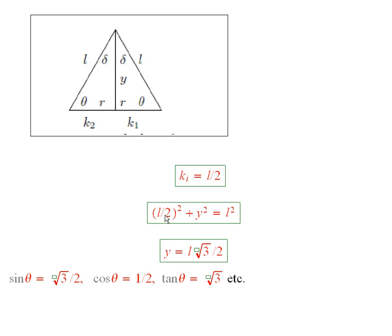Now because of that and the Pythagorean theorem, we can say l over 2 squared plus y squared is equal to l squared. And so y is equal to l times square root of 3 over 2.